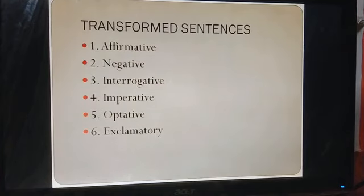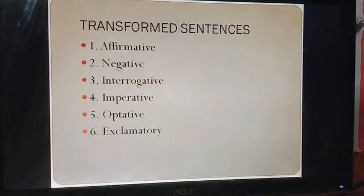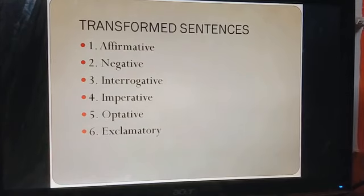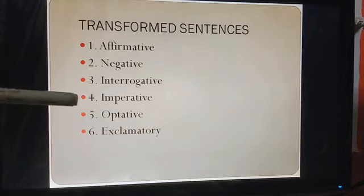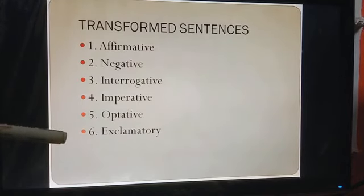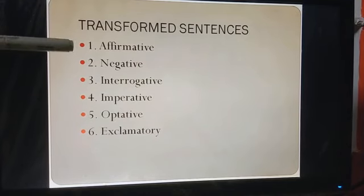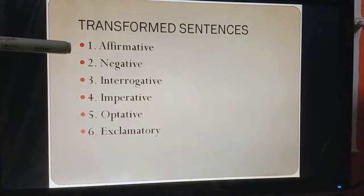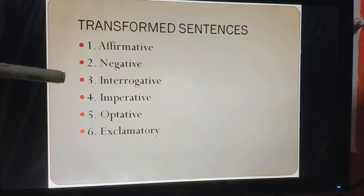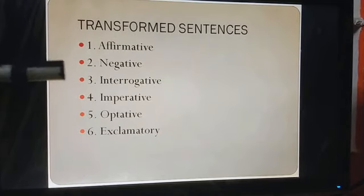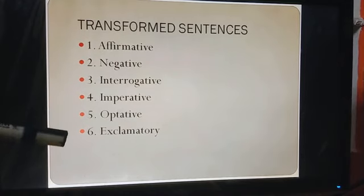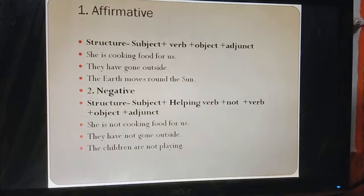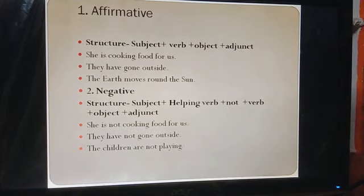Dear children, now we shall discuss transformed sentences. These sentences are of six types: affirmative, negative, interrogative, imperative, optative, and exclamatory. Affirmative के लिए कुछ और नाम भी हो सकते हैं — जैसे simple, declarative. यह सकारात्मक वाक्य है। दूसरा है negative — नकारात्मक। Interrogative — प्रश्नवाचक, जिसमें question पूछा जाता है। Imperative, optative, and exclamatory.